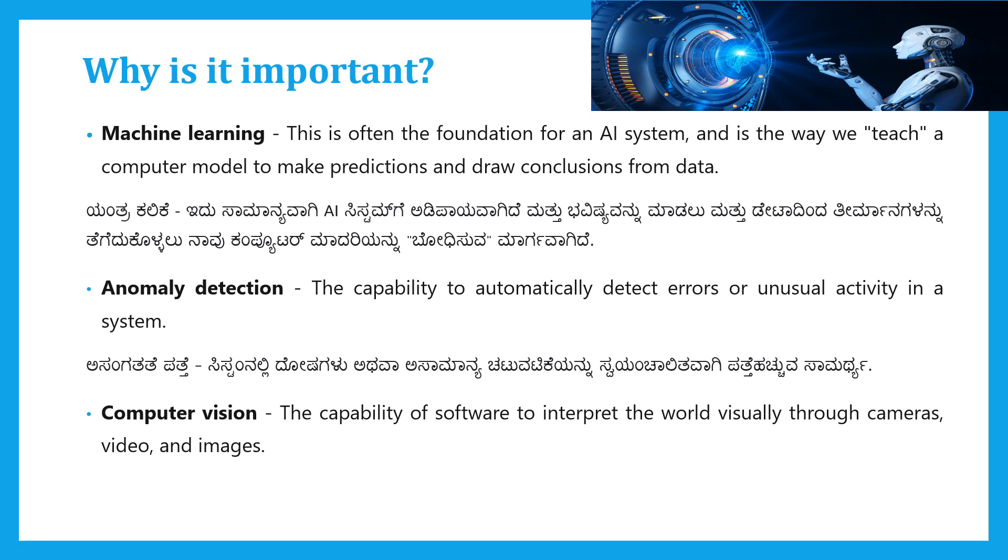Another definition: Computer vision is a field of artificial intelligence that trains and enables computers to understand the visual world. Computers can use digital images and deep learning models to accurately identify and classify objects and react to them.